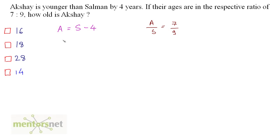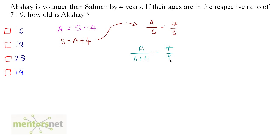We can write S is equal to A plus 4. So let us put this S equals to A plus 4 in the equation. We get A upon A plus 4 is equal to 7 by 9. So 9A is equal to 7 times A plus 4, which gives 7A plus 28. So 9A minus 7A is 2A is equal to 28.